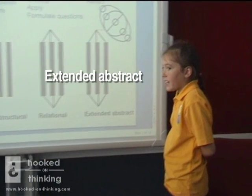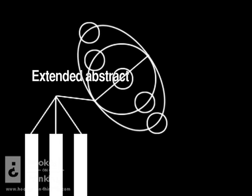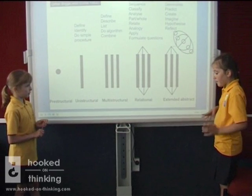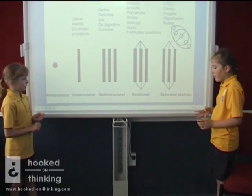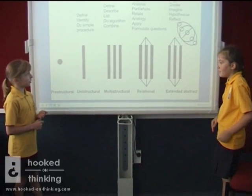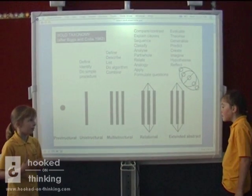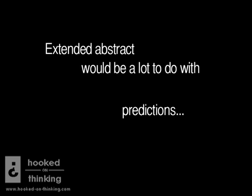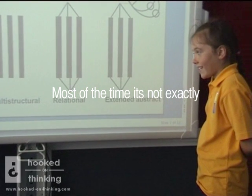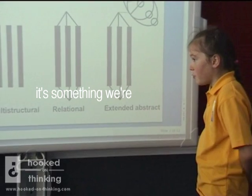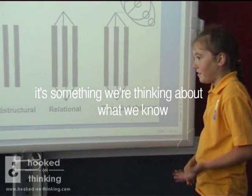Extended abstract isn't exactly the easiest thing — it's more complex because you've got to be able to think of something as a whole and then take something away from that, or predicting things, what's going to happen. Extended abstract has a lot to do with imagination, predictions, what can't happen. It's not exactly something we know; it's something we're thinking about from what we know.